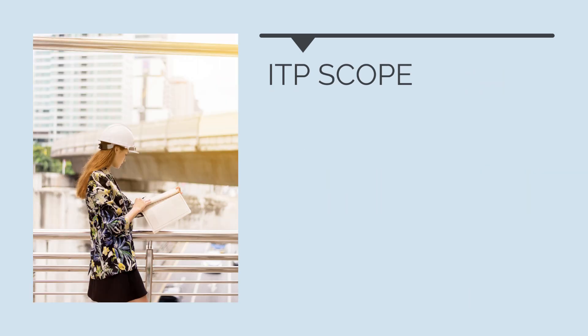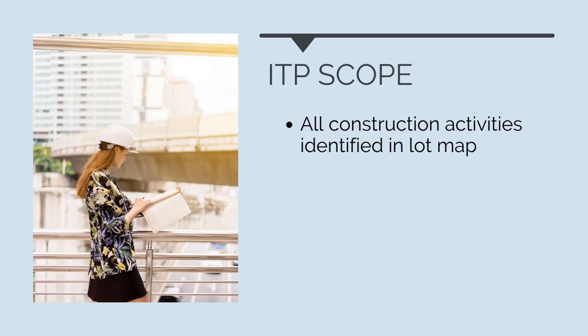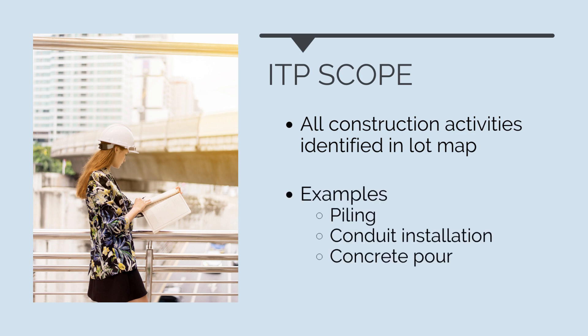Our ITP should cover each construction activity identified in the quality lot map. This will depend on a range of factors, but as examples, on previous projects we've completed one ITP per concrete foundation pile, one per section of conduit installation, or one per structural concrete pour. But activities like traffic management or service proving — as these facilitate works but don't result in deliverables — there's no need to capture these in an ITP.